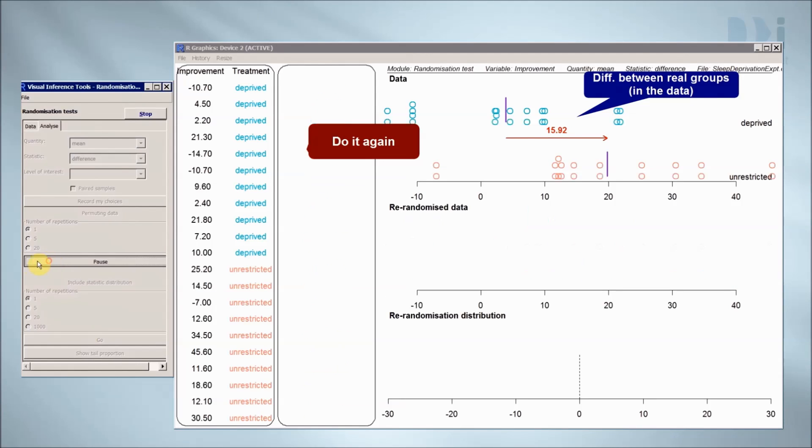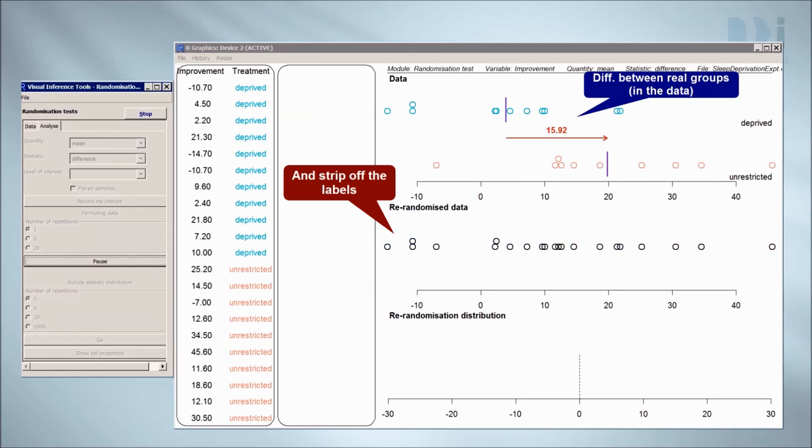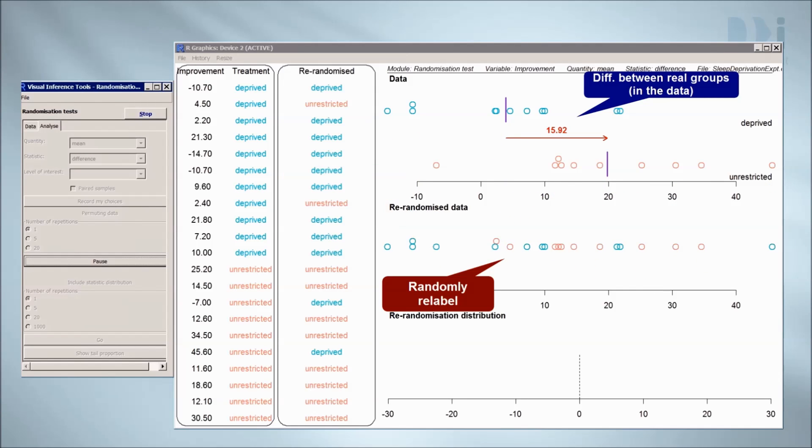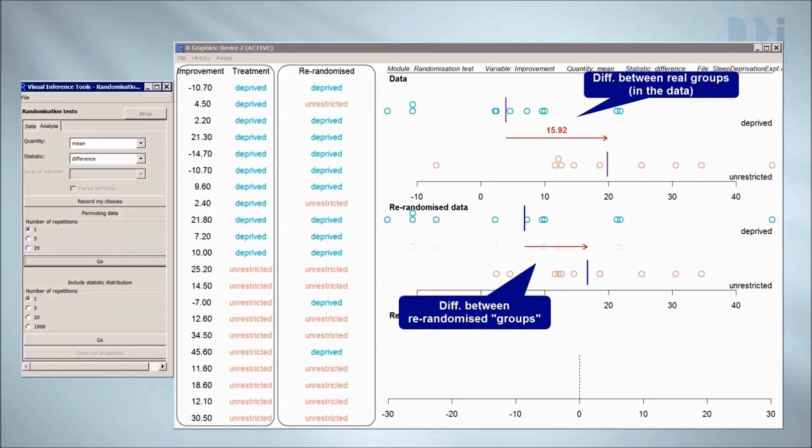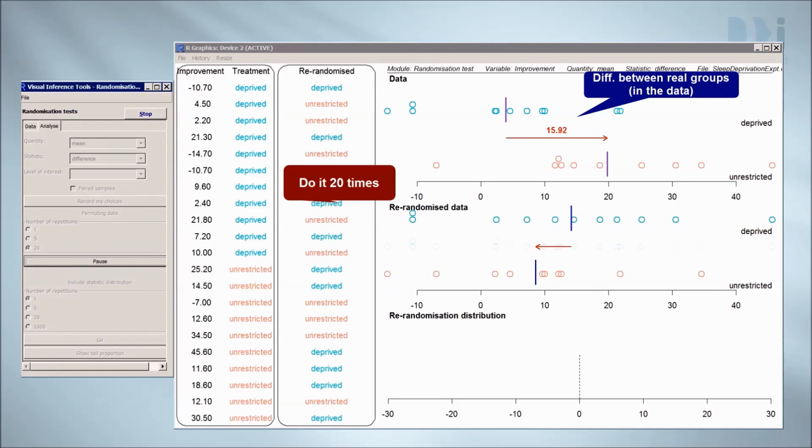Let's do this again. Strip the labels off. Randomly relabel. Pull them apart into two new randomization groups. Look at the difference in means. We'll do this 20 times, and compare the differences random reassignment is producing to the 15.92 we got in the experiment.